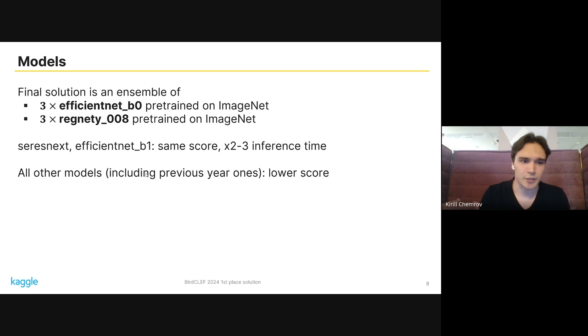We considered other models. Some of them provide us with the same score, like SeriesNext or EfficientNet-B1, B2, and so on. But these models dramatically increase the inference time. That's why we discard them.